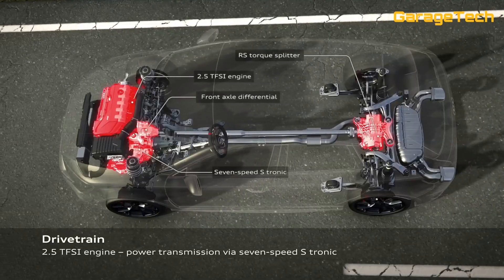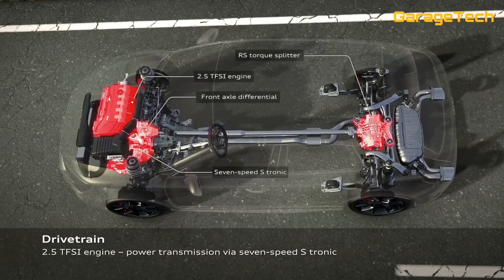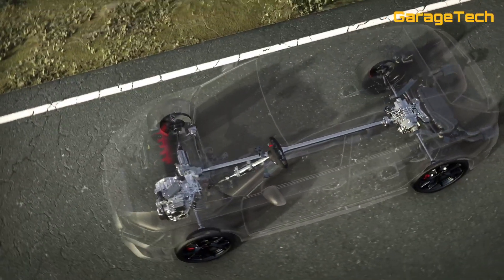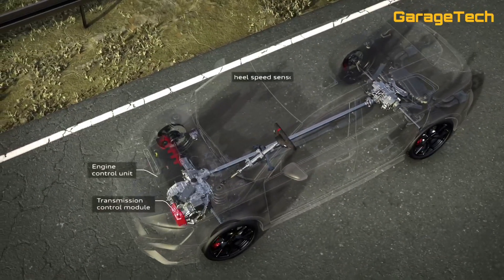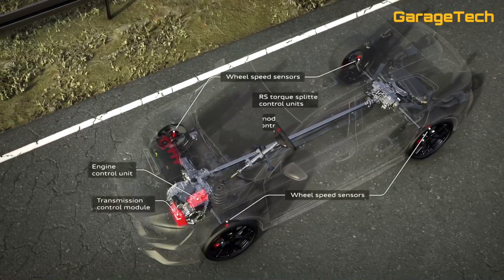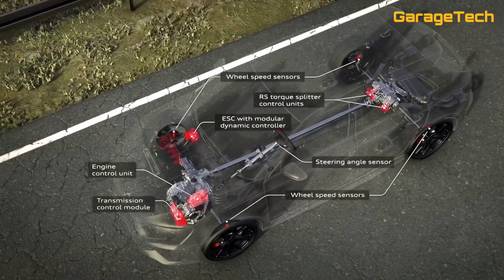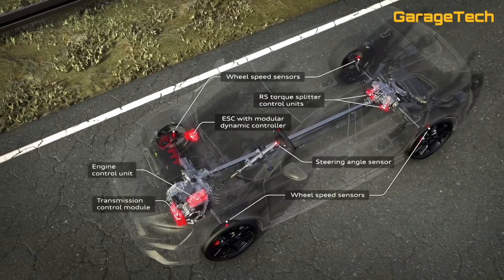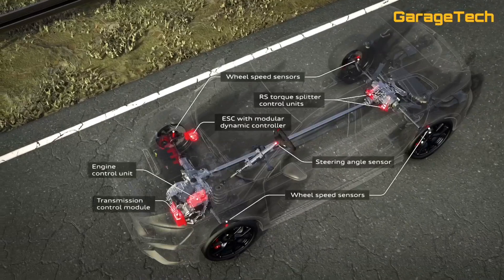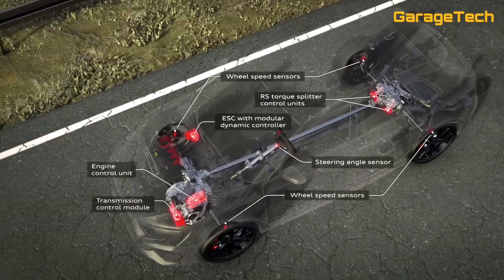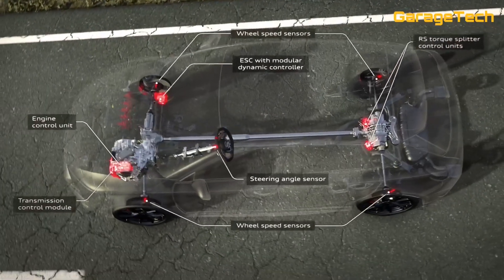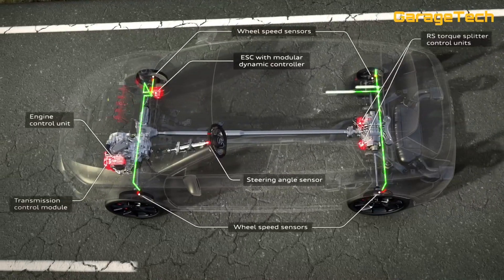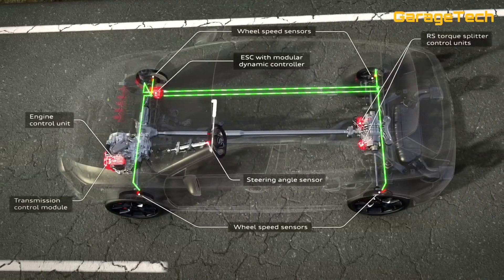The RS torque splitter makes active, fully variable torque vectoring between the rear wheels possible, unlike the rear axle differential of the previous version — the Haldex unit — which used one multi-disc clutch pack. The torque splitter uses two electronically controlled multi-disc clutches, one on each respective drive shaft. Each of the two multi-disc clutches has its own control unit, which uses the electronic stabilisation control's wheel speed sensors to measure the wheel speed.